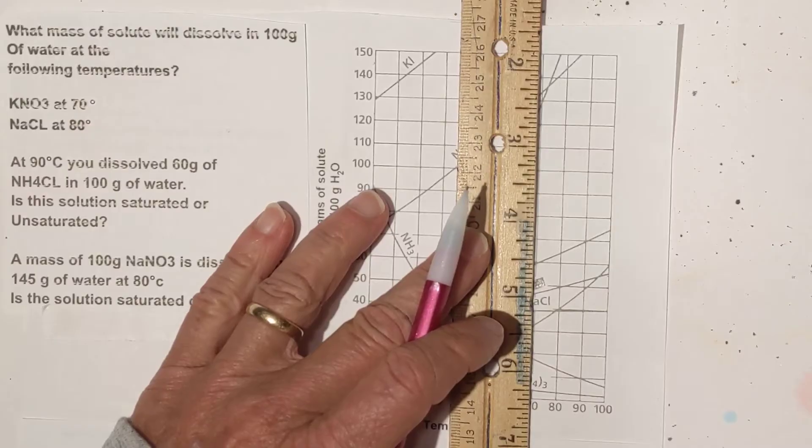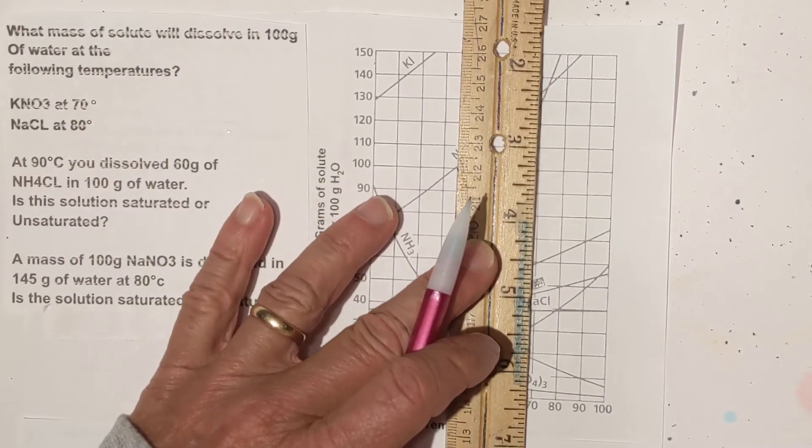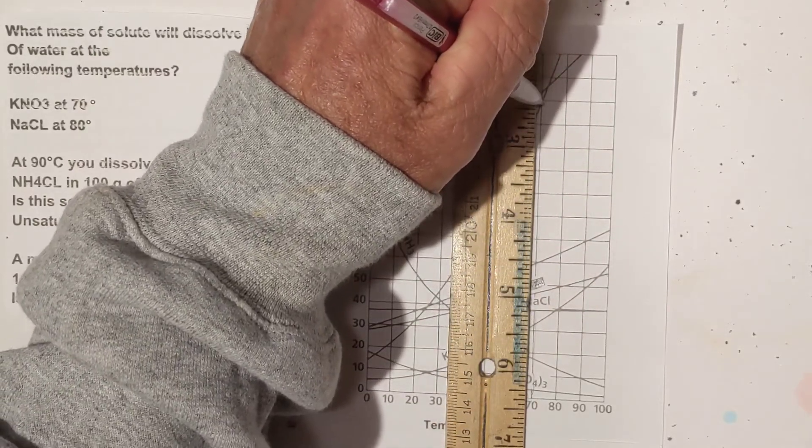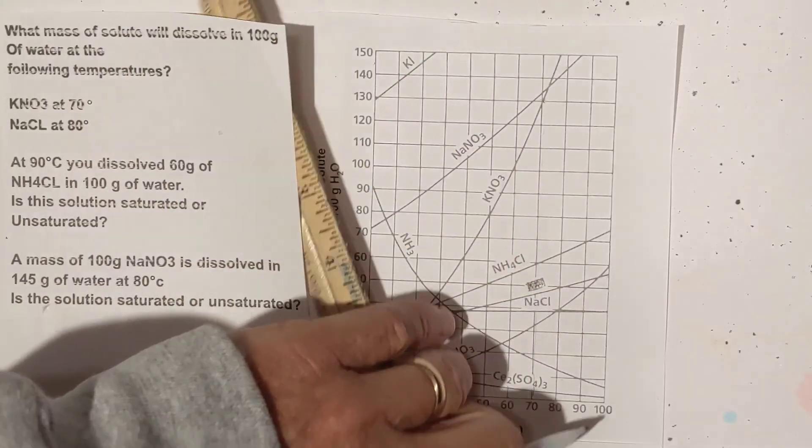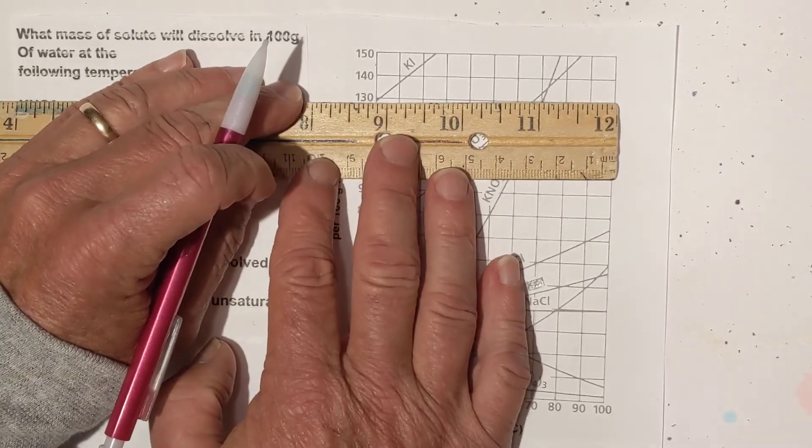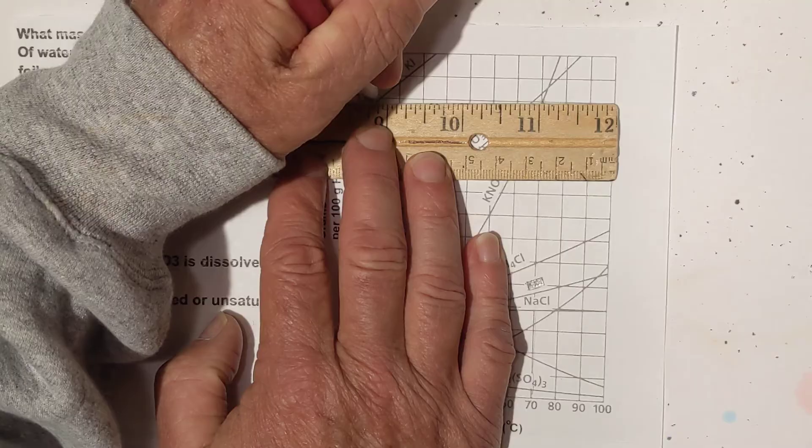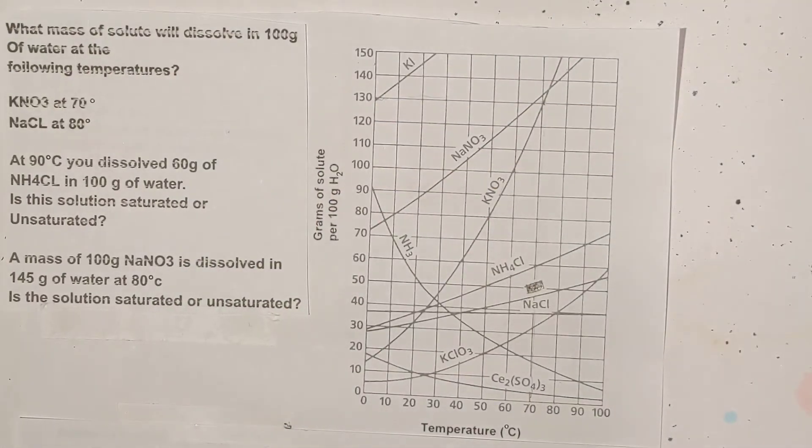So I'm going to take the ruler and it is right on this line right here, so we're going up to here and it intersects right there. Then we can move over and it looks like 130 grams. And what I'm going to do is I'll go ahead and draw this for you so you can see what I did.